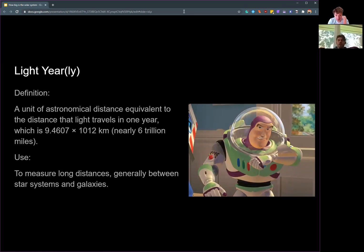And now light years are another unit of astronomical measurement. It's equivalent to the distance that light travels in one year, which is 9.4607 times 10 to the 12 kilometers, nearly six trillion miles, which is massive.